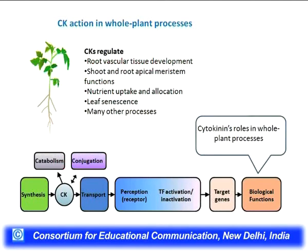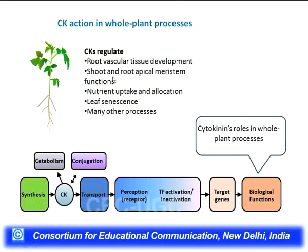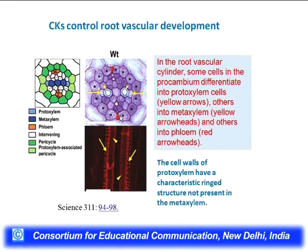In the last few minutes I will tell you about cytokinin action in whole plant processes. Cytokinin, besides cell division, has many other roles: root and vascular tissue development, overall vascular development, shoot and root apical meristem formation and function, nutrient uptake and allocation, and leaf senescence, among many other processes. Cytokinin is required for the development of normal xylem.